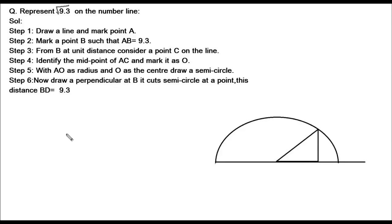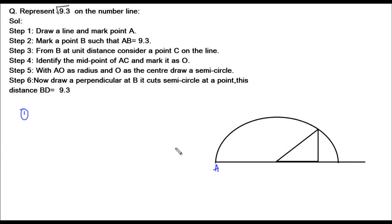To save time, I have already drawn the number line and semicircle. Let's go through the steps. In step 1, we draw a line and mark a point A. Then we mark a point B on this line such that AB measures 9.3 units.